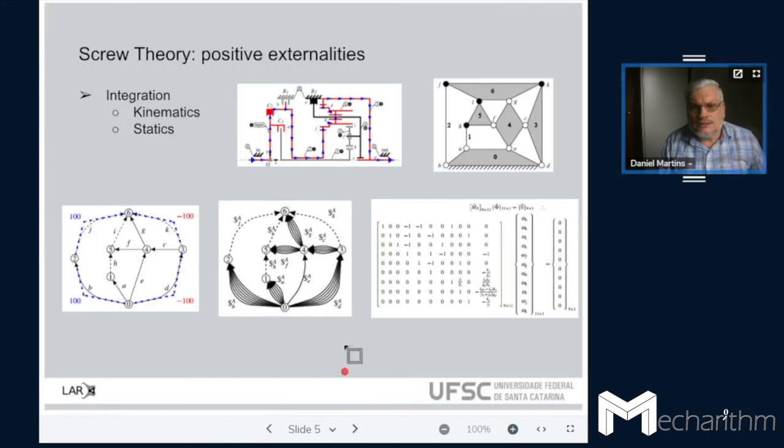So using screw theory, you have an extra layer of positive externality, that is the integration between kinematics and statics. Most of the other types of representations like the Denavit-Hartenberg and so on, they are only focused on the kinematics. But screw theory is a dual set. You really have an understanding of what you are free to move, that is the kinematics, and what you are constrained to move, that is the statics. So you gain two in one.